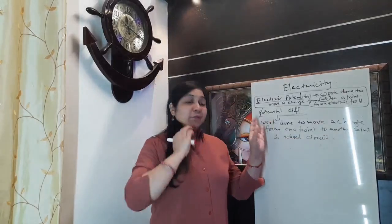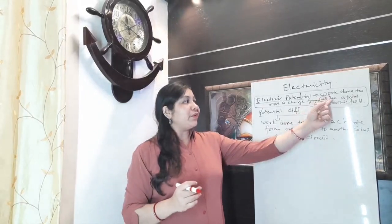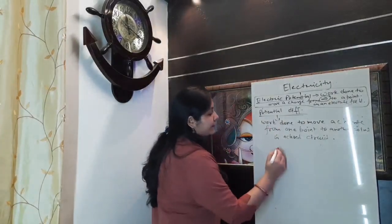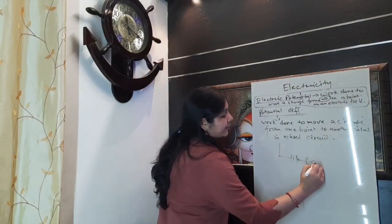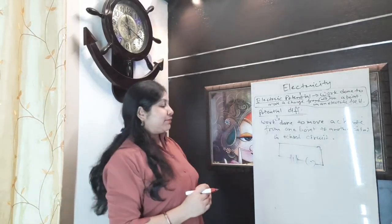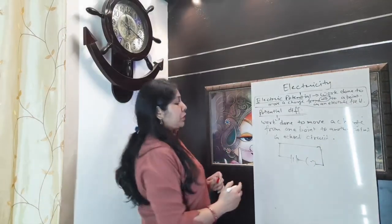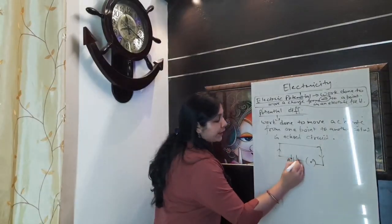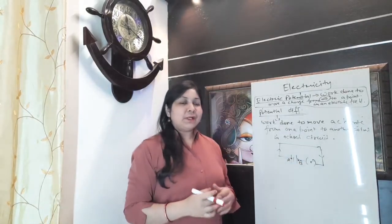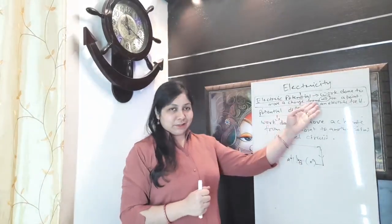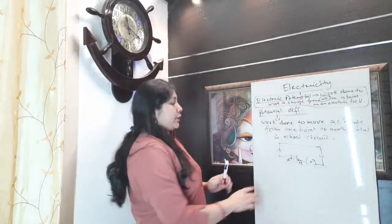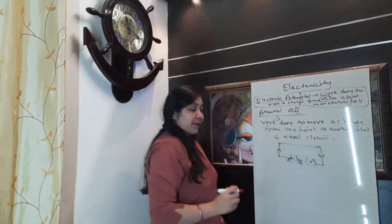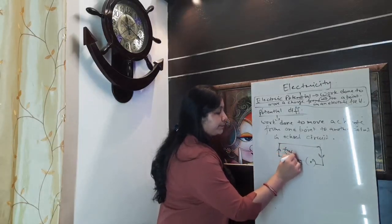This is the work done to move a charge from one point to another. Notice: in electric potential, one point was fixed — infinity to a point. But in potential difference, both points are fixed. I am making an electric circuit here. This is a closed circuit. I am taking two points: point A and point B. In practical life, we move charges or electrons from one point to another point like this in a closed circuit. Both the points are fixed.